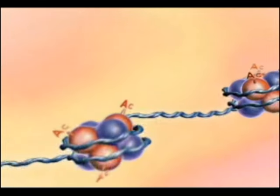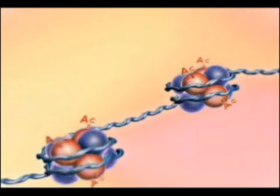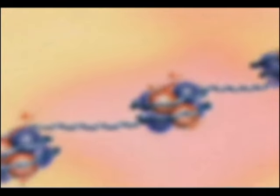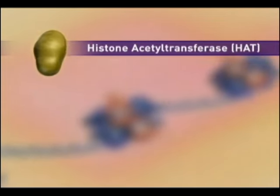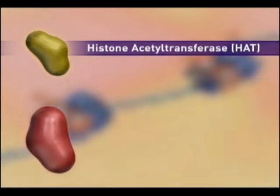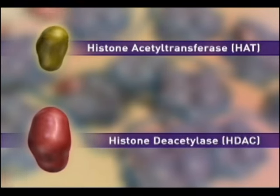Histone acetylation is controlled by the balance in the activity of two enzymes: histone acetyltransferase or HAT, and histone deacetylase or HDAC.